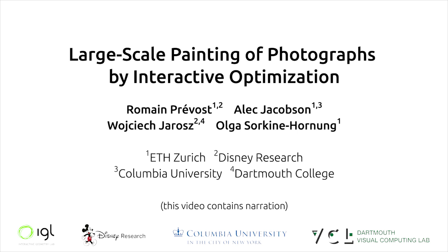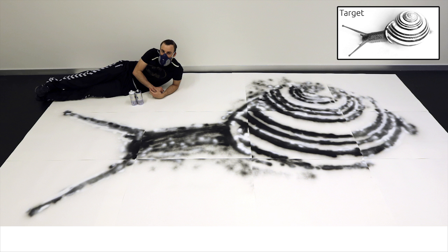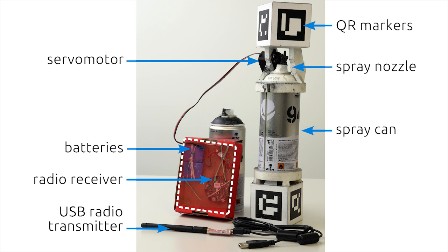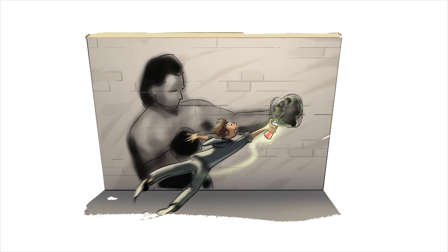We present a system that assists novice users in spray painting large-scale paintings off input photographs. Our prototype device mounts on top of a standard spray can and enables programmatically actuating the spray can. As the user waves the spray can in front of the canvas, we track its position and determine the optimal amount of paint to disperse.